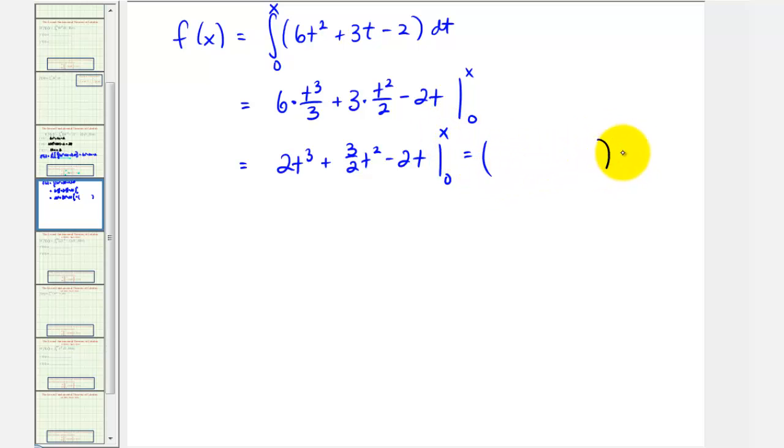We'll first substitute x and then we'll substitute zero. So when t is equal to x, we have 2x to the third plus 3 halves x squared minus 2x. And when t is zero, we have zero. So now we know that f of x equals 2x to the third plus 3 halves x squared minus 2x.